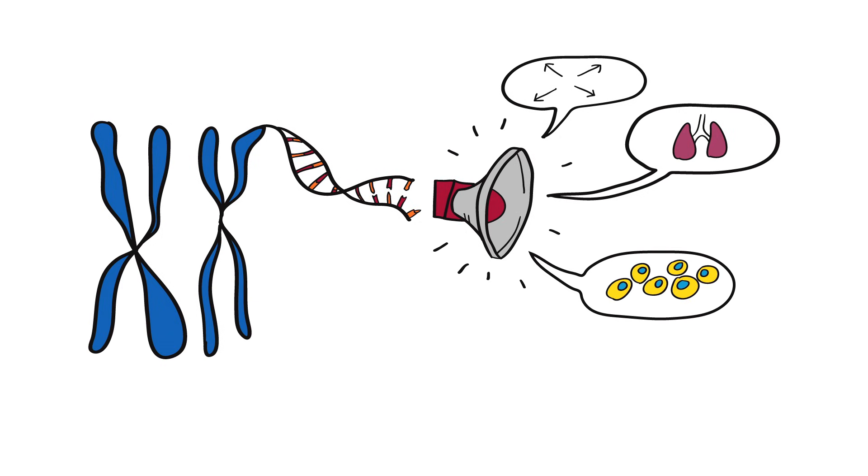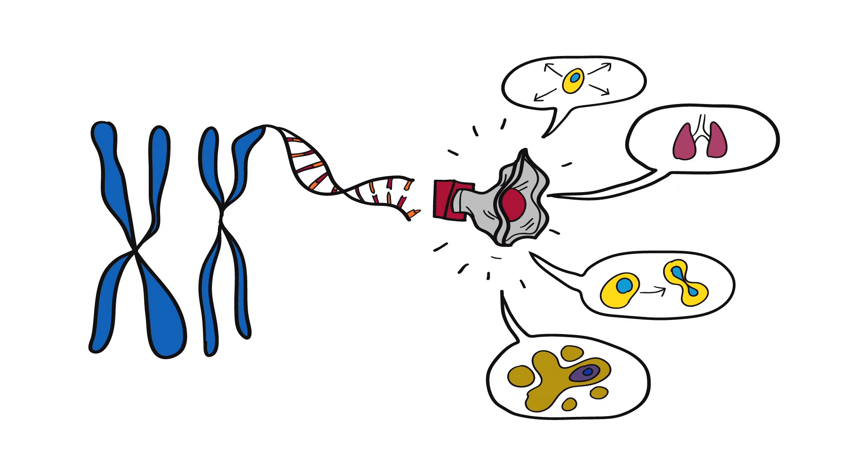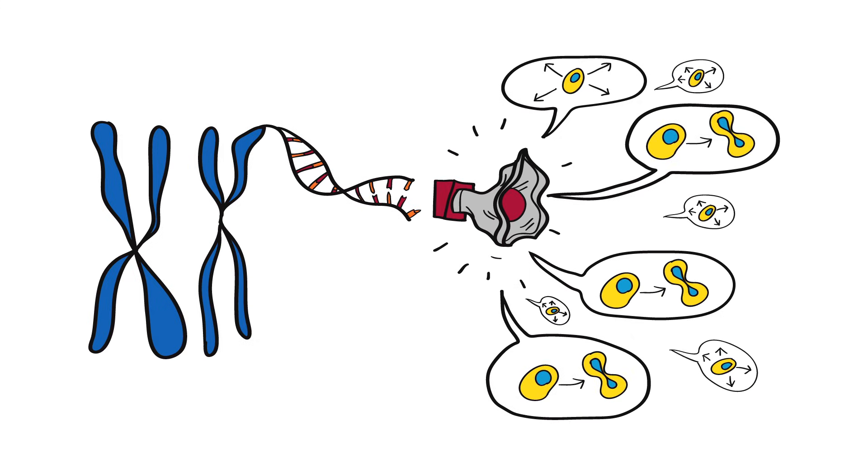Genes inside each cell tell it to grow, work, divide, and die. Normally, our cells follow these orders, and we remain healthy. But sometimes the instructions in some cells get mixed up, and these cells start to grow and divide uncontrollably.